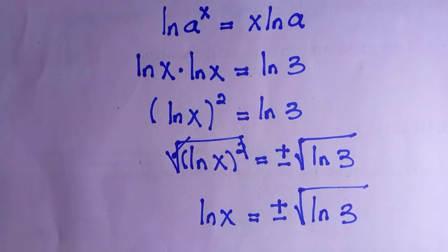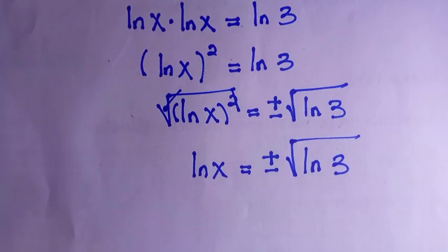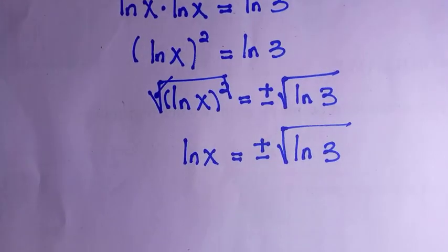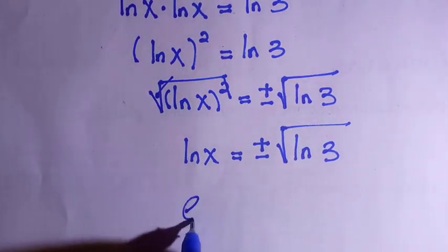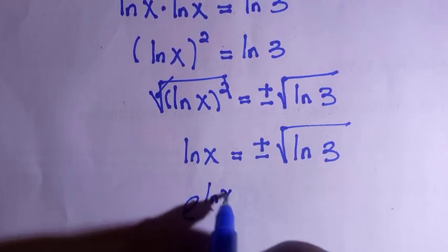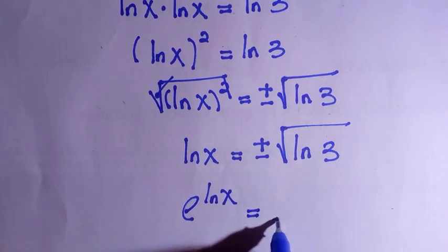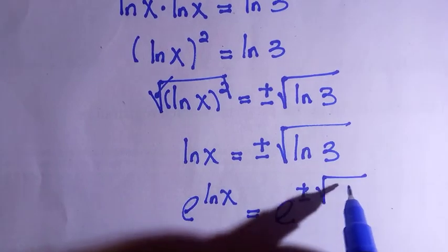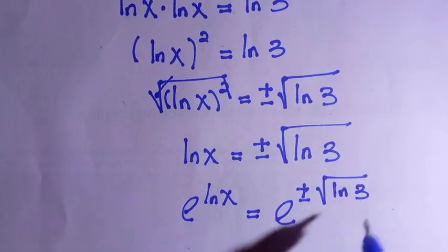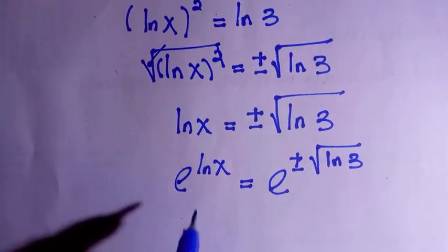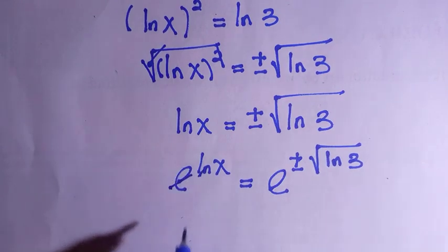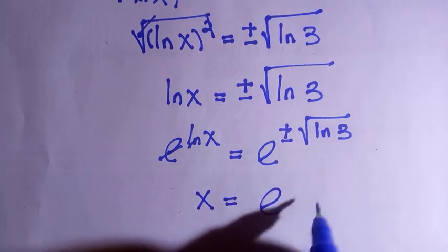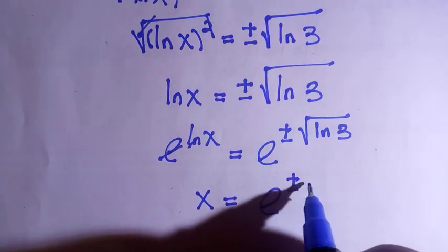And the question says we define x, and to cancel this ln we introduce exponential to both sides. So we have exponential ln x equals to exponential plus or minus ln 3. So if this goes here we are going to have x remains equals to exponential plus or minus the root of ln 3.